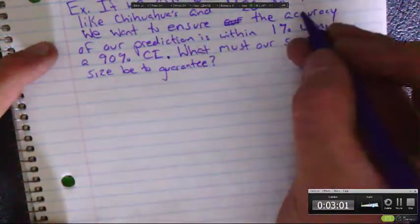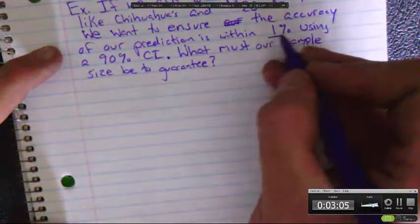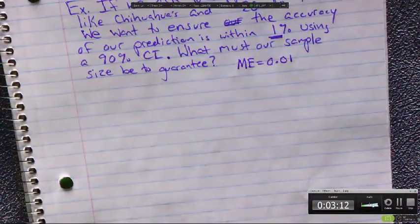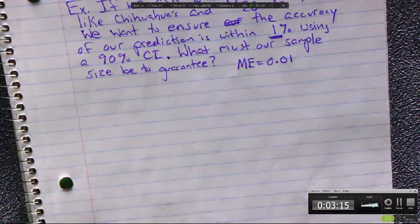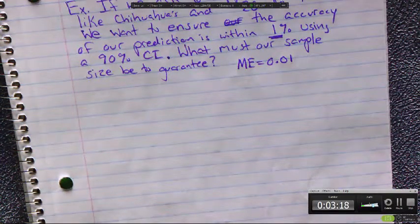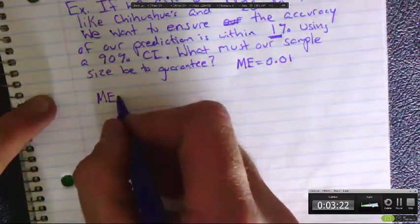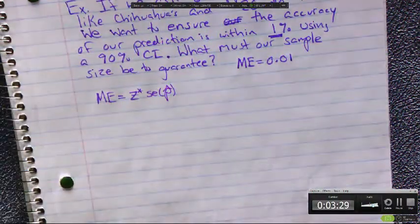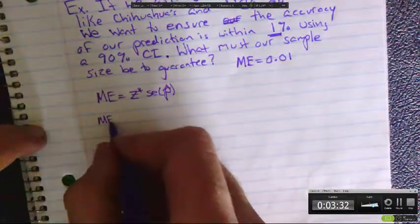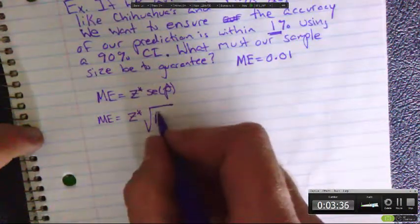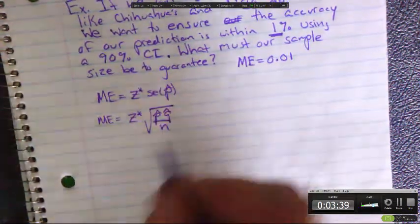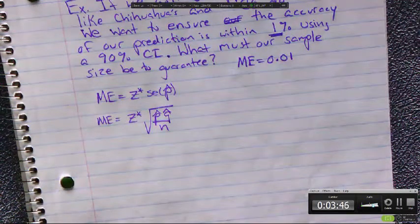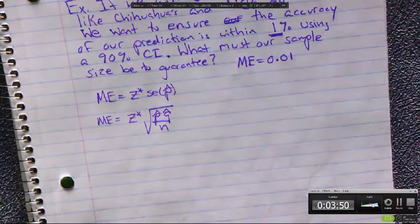We're wanting to ensure the accuracy of our margin of error is within 1%. That tells us our margin of error is 0.01. We want to be within 1% of being correct. We want to use a 90% confidence interval. So we're going to use this formula: margin of error equals z critical times the standard error of p hat, which is the square root of p hat q hat over n. We don't know the true population proportion. We don't know p. We're trying to predict it within an accuracy rating of 1% using a 90% confidence interval.